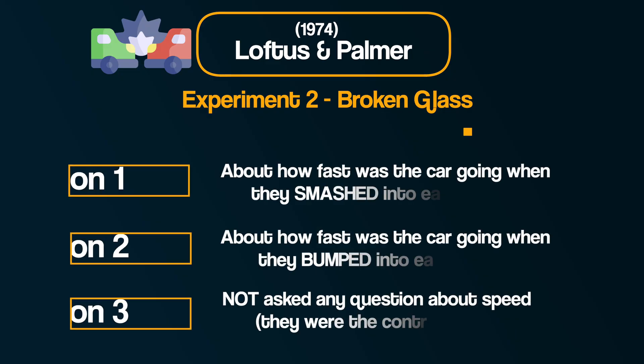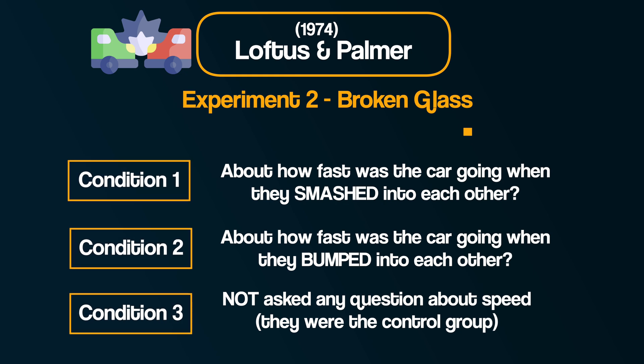The critical question was: 'Did you see any broken glass?' Of course there was no broken glass in the original film, but the researchers predicted that participants would be more likely to say there was in the condition where they were asked if the cars 'smashed' into each other. And that's exactly what they found. This research further demonstrates how the accuracy of memory can be affected by information, and specifically leading questions.